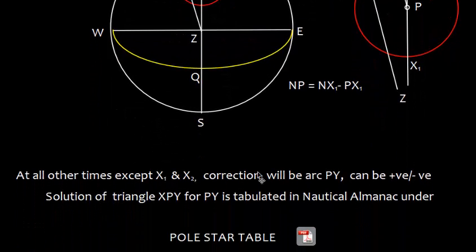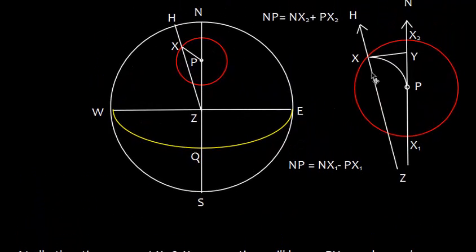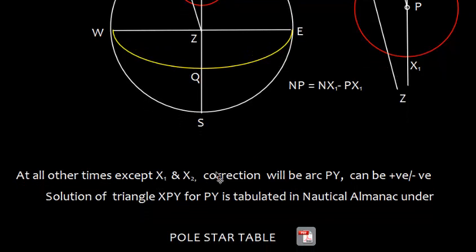Let me explain this, that all other times, except x1 and x2, some correction will be arc py. And that can be positive or negative, like we explained this here. So, the solution of triangle x py, for py is tabulated in nautical almanac, and this is called pole star table.